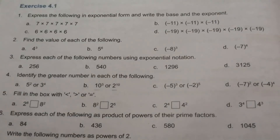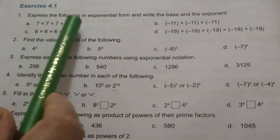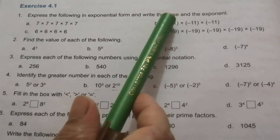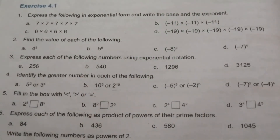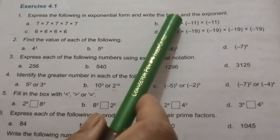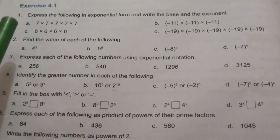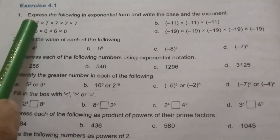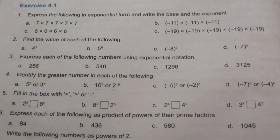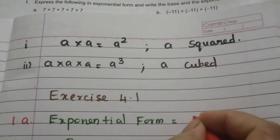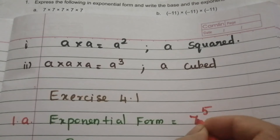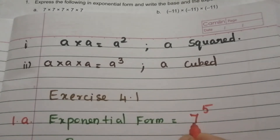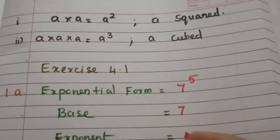Now we will do Exercise 4.1. Problem 1: Express the following in exponential form and write the base and exponent. (a) 7 into 7 into 7 into 7 into 7 into 7 — 7 is repeated 5 times, so the exponential form is 7 power 5; base is 7, exponent is 5. (b) Minus 11 into minus 11 into minus 11 — exponential form is minus 11 power 3; base is minus 11, exponent is 3.